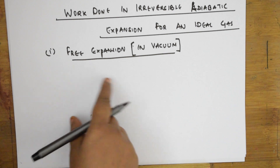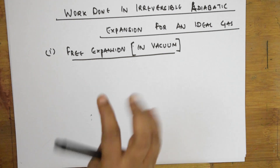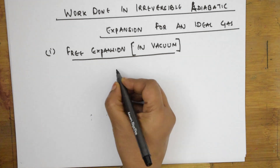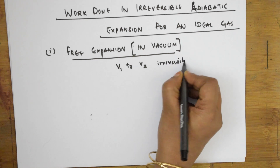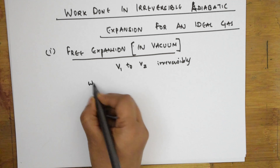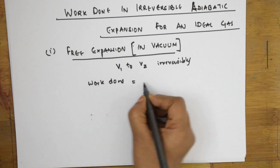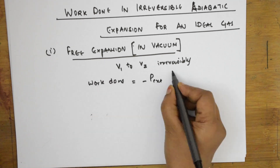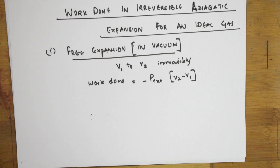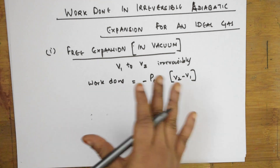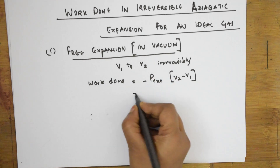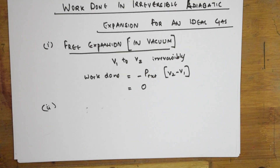Now, similar to isothermal, we are going to study free expansion in vacuum. When an ideal gas expands adiabatically in vacuum — that is, volume from V1 to V2 — irreversibly, work done is equal to minus p-external times (V2 minus V1). Because in a vacuum there is no external pressure, work done becomes equal to zero.